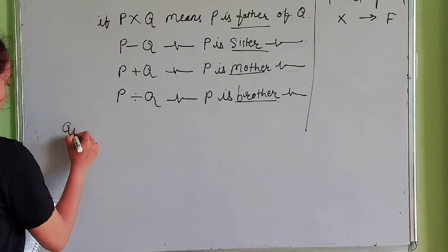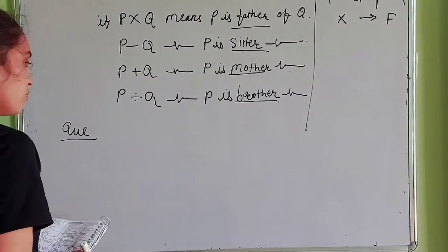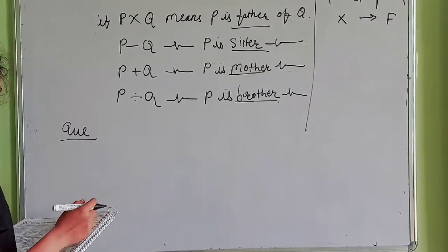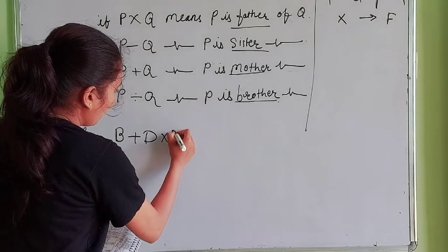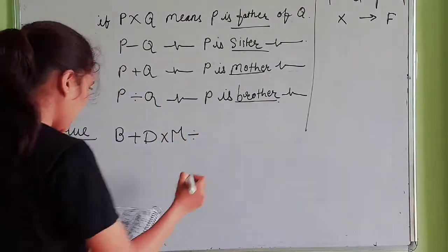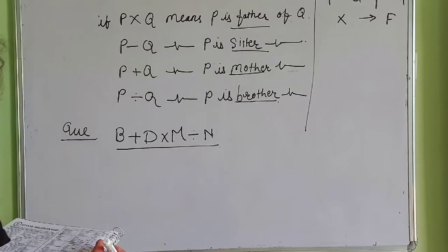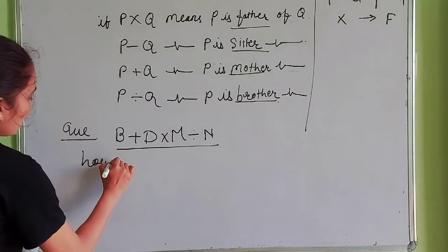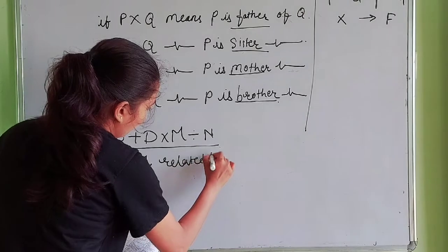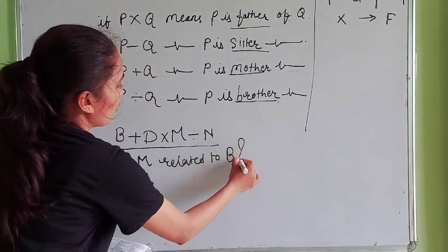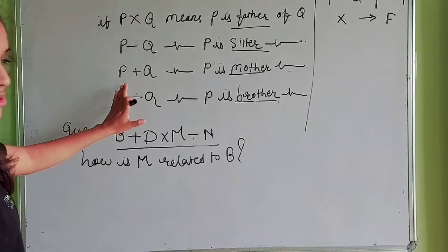The question is: from the given expression, they have given us one expression and we have to find the answer from this expression. They have given: B + D × M ÷ N. We have to use this expression. The question is: how is M related to B?